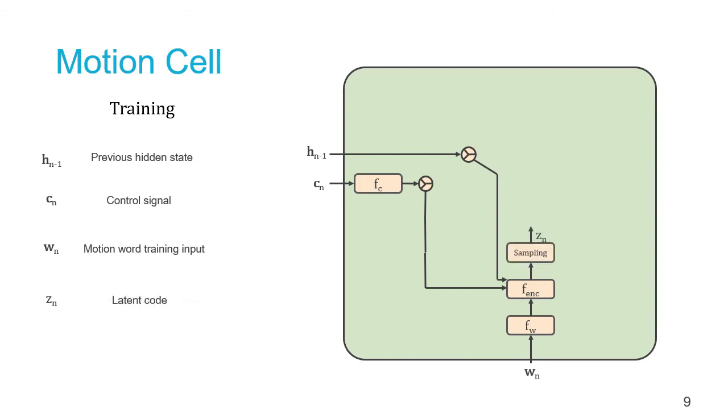We then use that posterior distribution to sample the latent code, which is represented by Z of N.